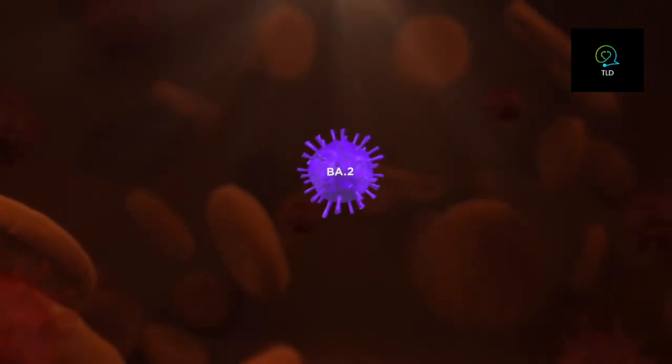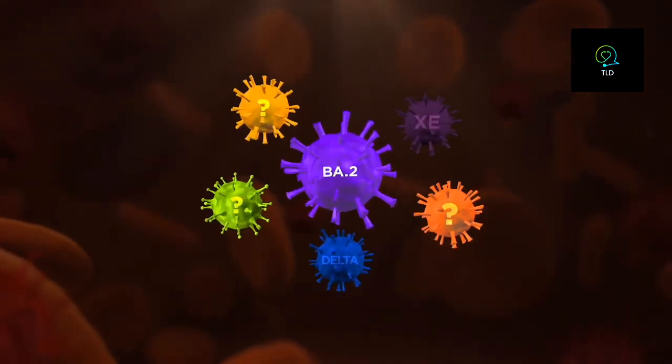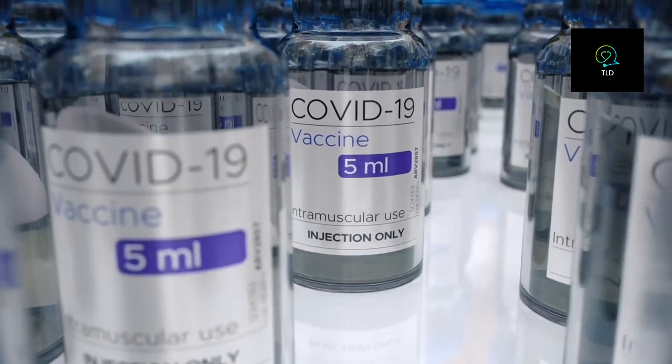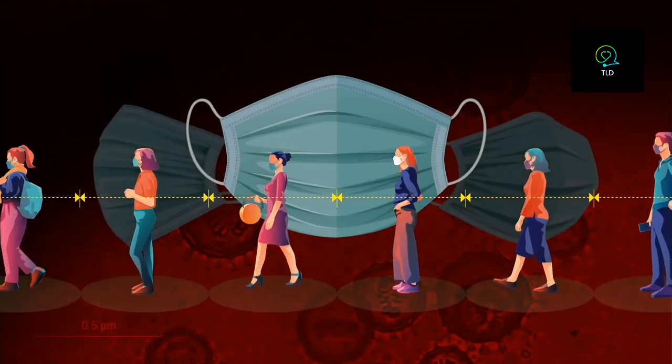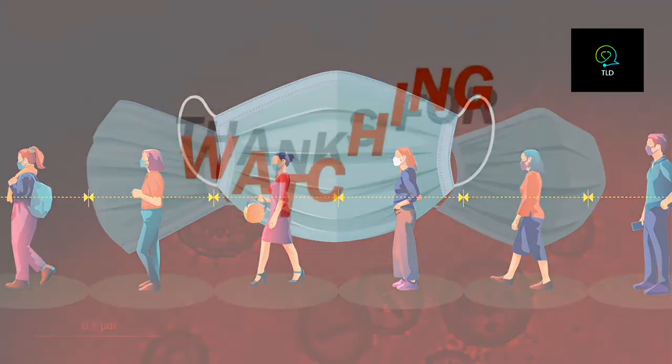New variants and sub-lineages will keep emerging as people continue to become infected. That's why scientists are pushing for higher vaccination rates and for strategies such as physical distancing and mask wearing to help slow global transmission.